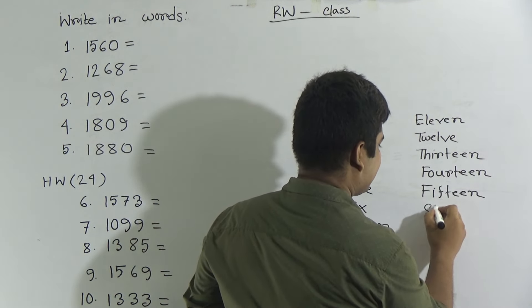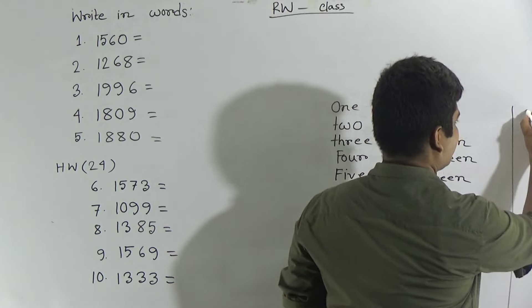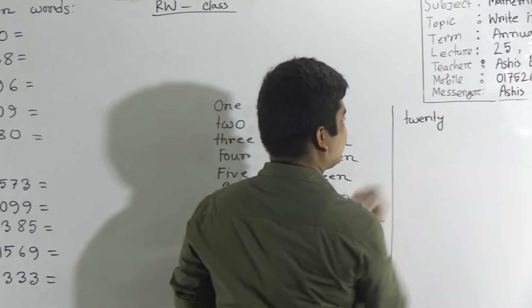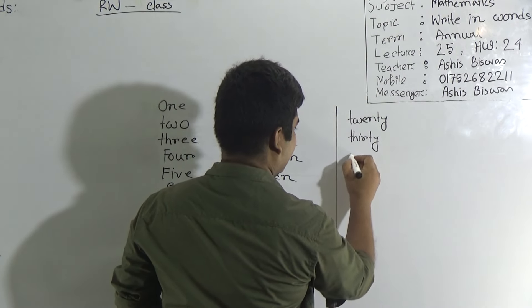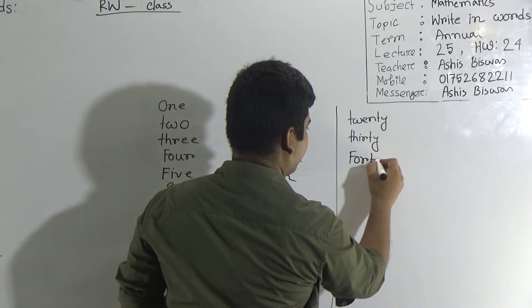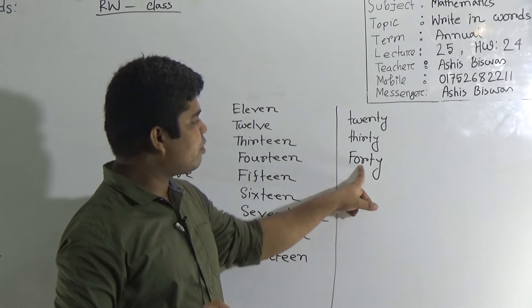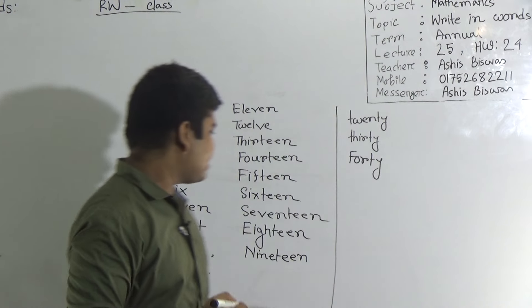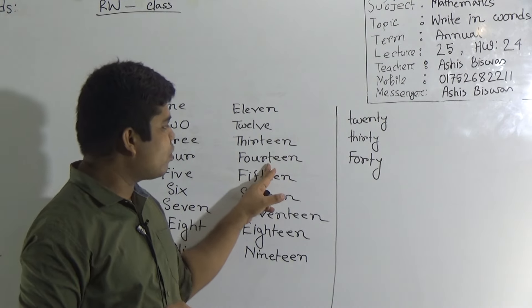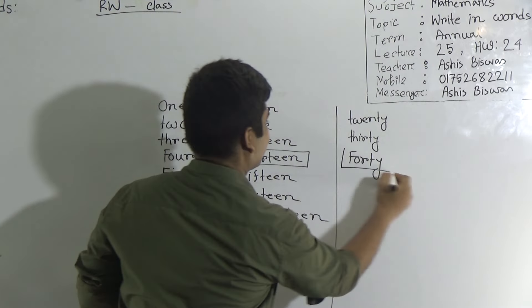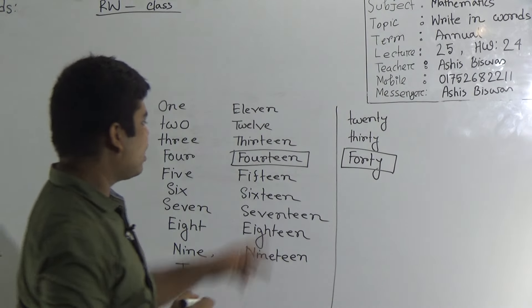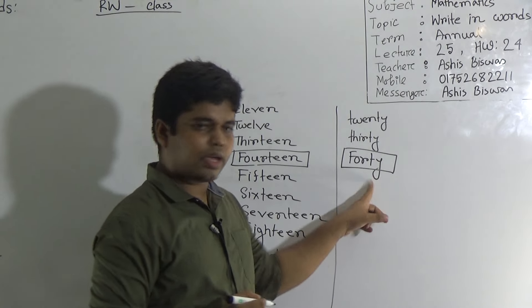Then we shall learn 20 T-W-E-N-T-Y, then 30 T-H-I-R-T-Y, then 40. Dear students notice the spelling of 40 is F-O-R-T-Y and the spelling of 14 is F-O-U-R-T-E-E-N. Notice very carefully, you do a lot of mistake in this section, 14 and 40, be careful.